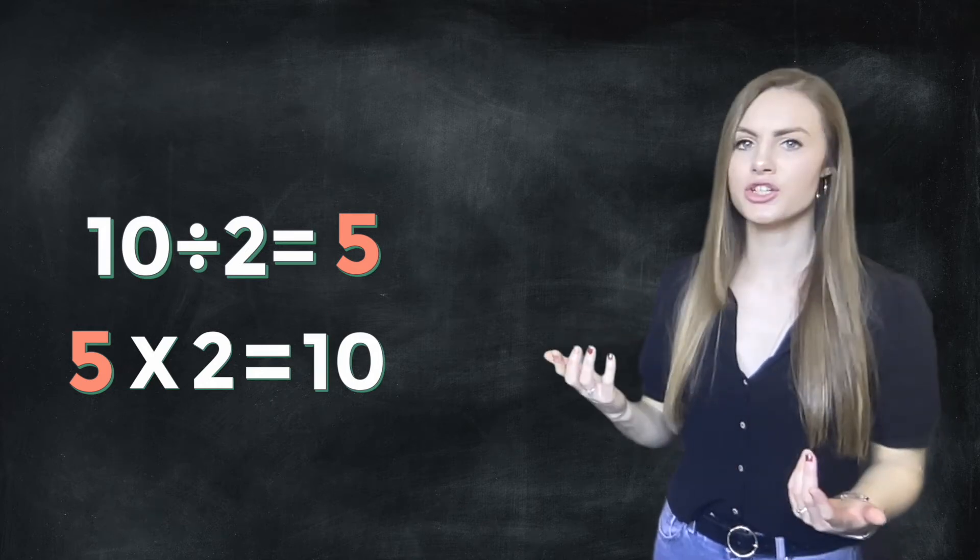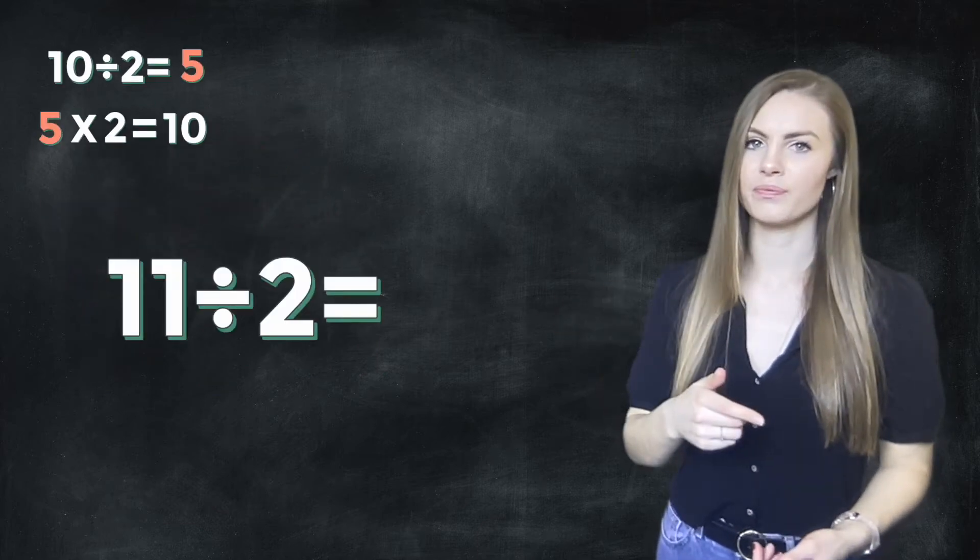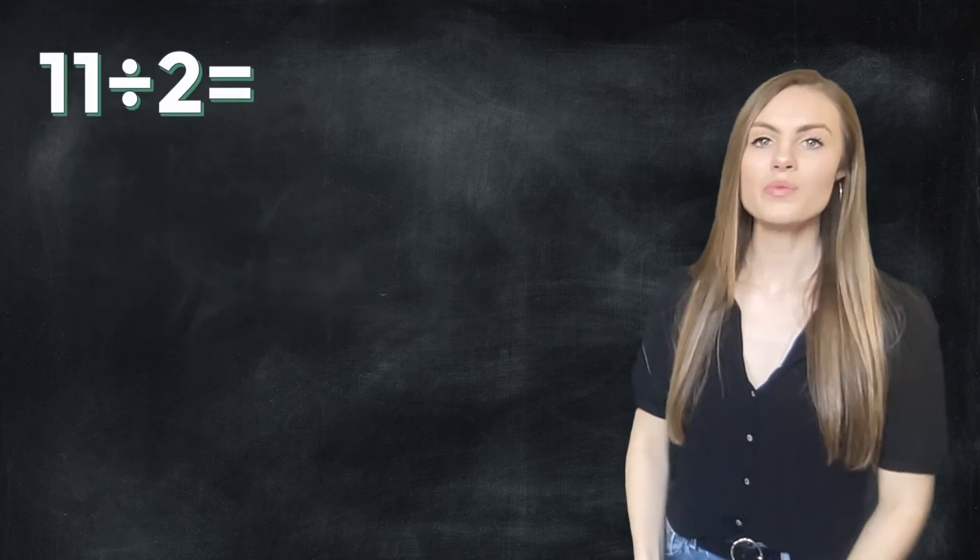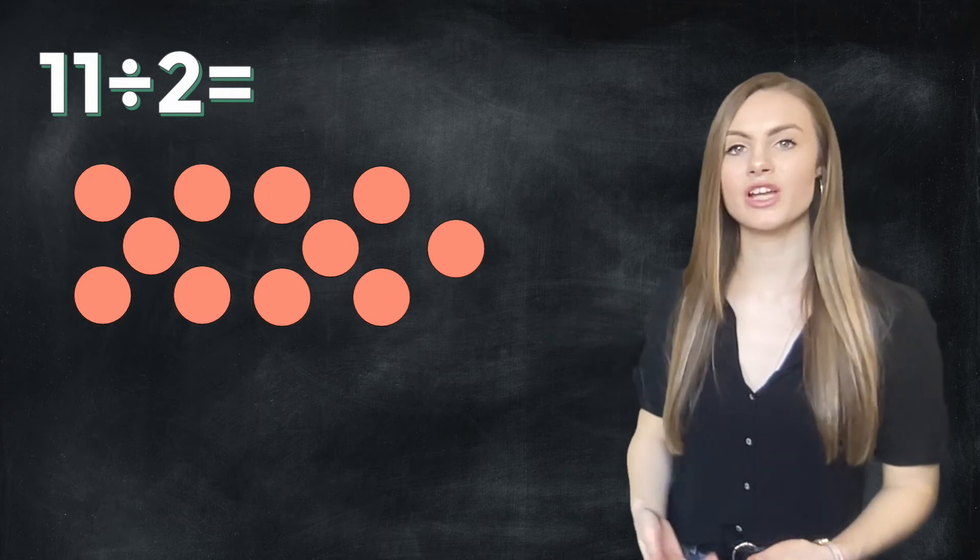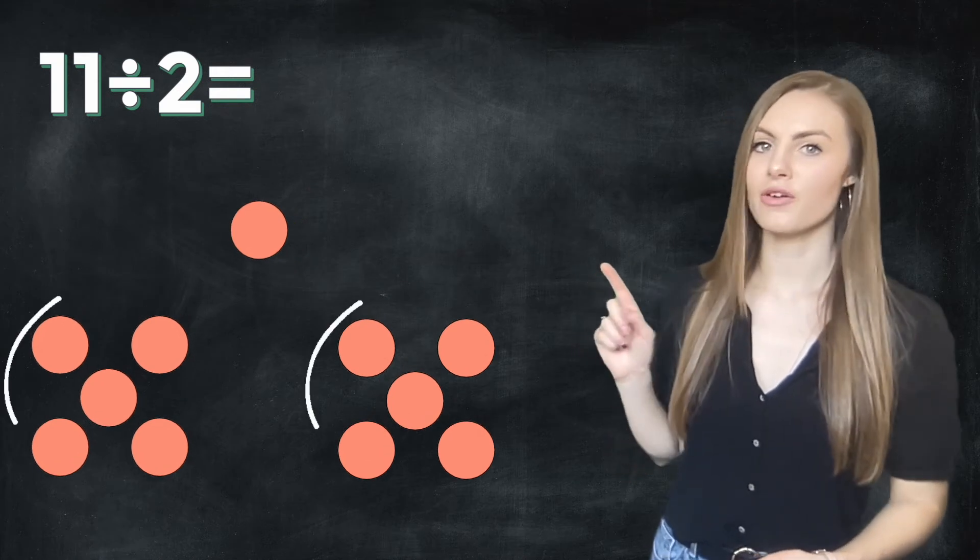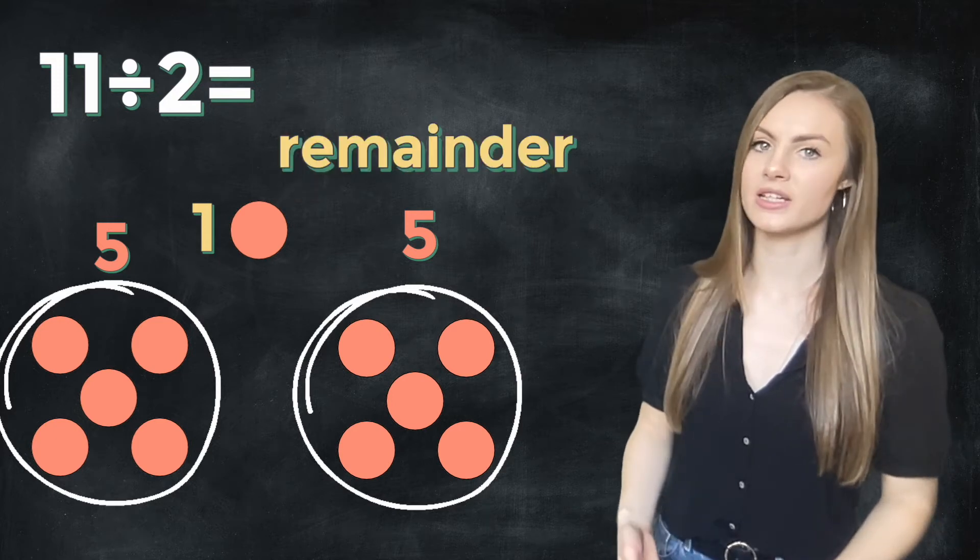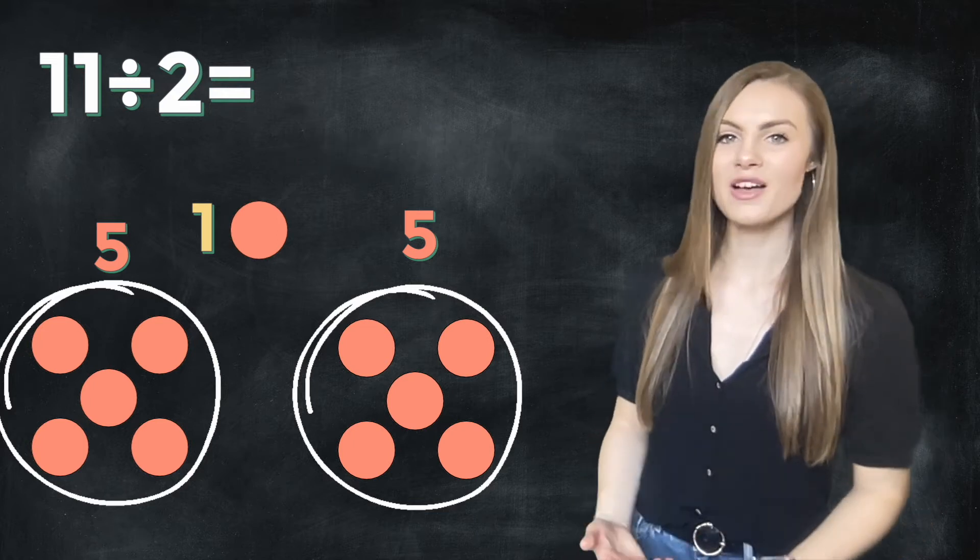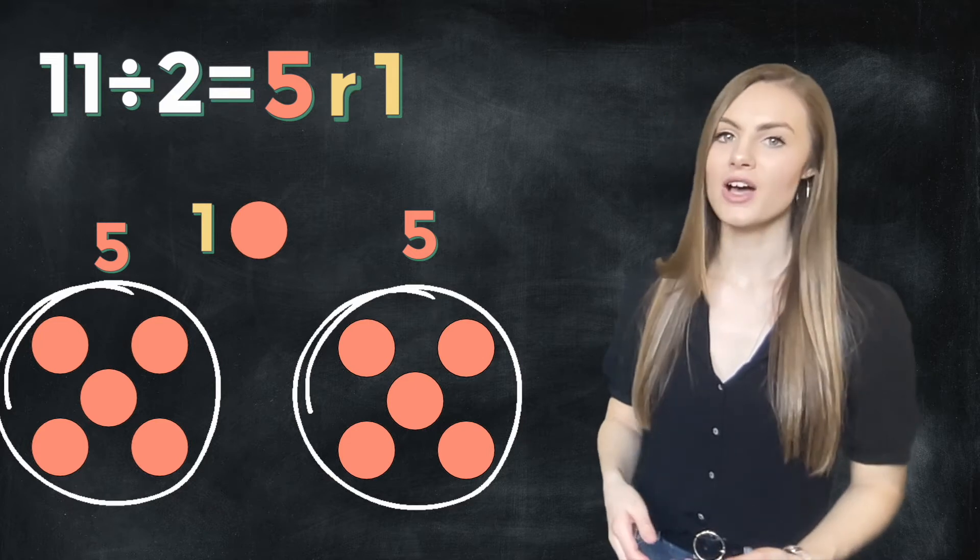But what do I do when my question isn't in my times table facts? For example, 11 divided by 2. Let's work through this problem together. When we're doing division we are sharing equally into groups. So for this example, 11 divided by 2, I'm going to share into two equal groups. As you can see there are five in each group but there's one left over. In maths we call that leftover a remainder and they're very important and do not like to be forgotten.